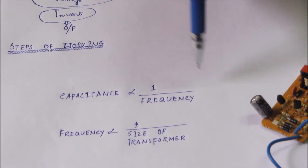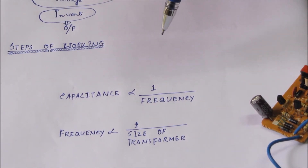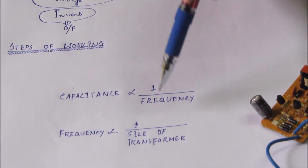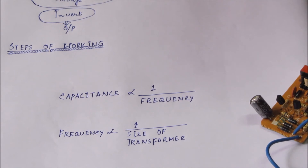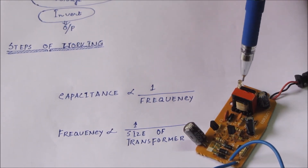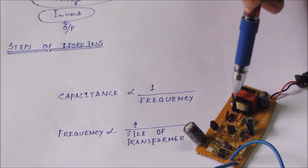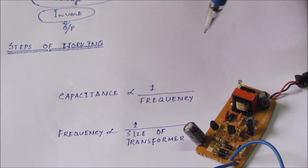We know that capacitance is proportional to one over frequency. As soon as we increase the frequency of any circuitry, the value of capacitor reduces, and vice versa. Similarly, as soon as the frequency increases, the size of the transformer can also be reduced. So by increasing the frequency we can reduce the size of the transformer.